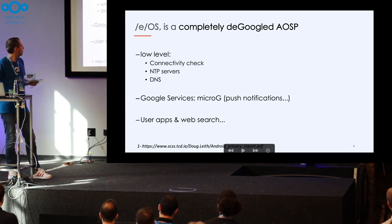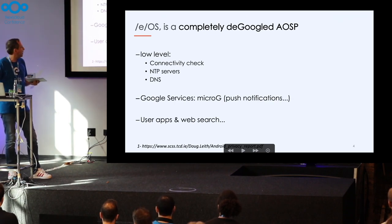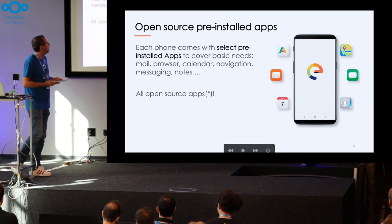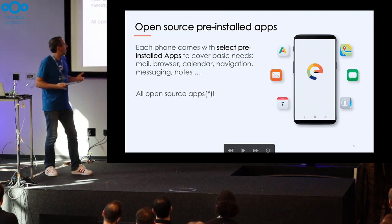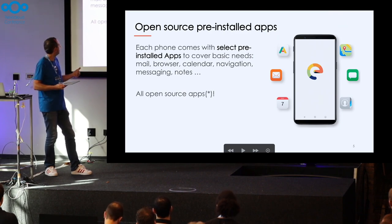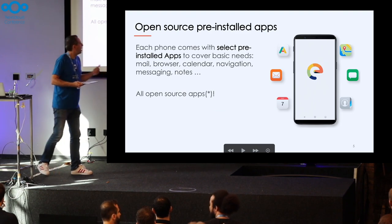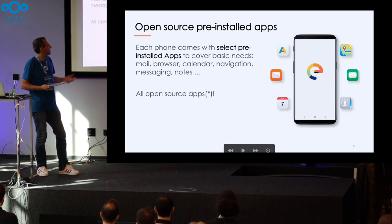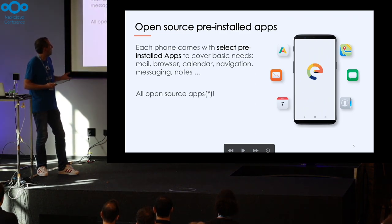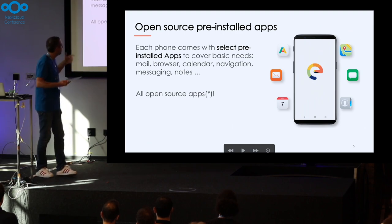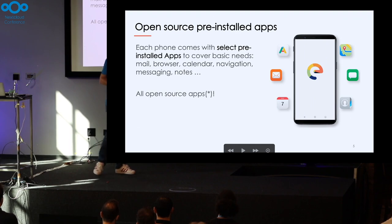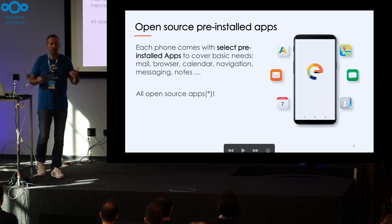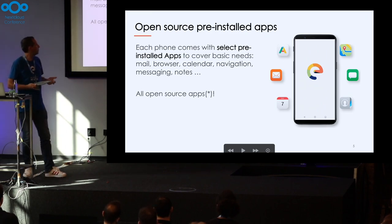So we did the effort to clean all the low-level stuff, replace Google services with a nice open-source project called MicroG, which is useful for instance for push notifications. And we also pre-install a few applications — your email application, calendar, contacts, maps, messages, and an App Store. We replace these with open-source applications. There is one exception today: the maps application, which is Magic Earth and is a proprietary application. We hope that this can change, or that we can soon find a good enough open-source alternative.